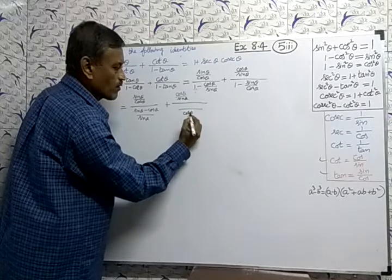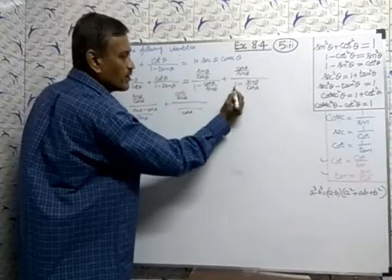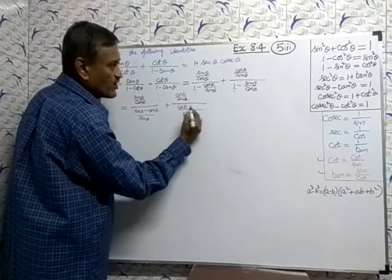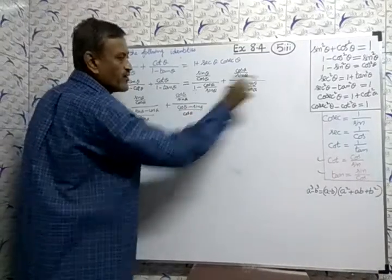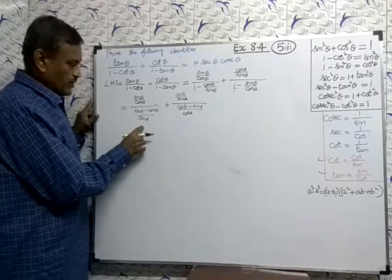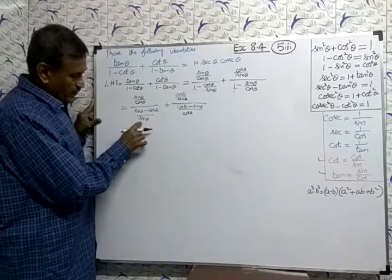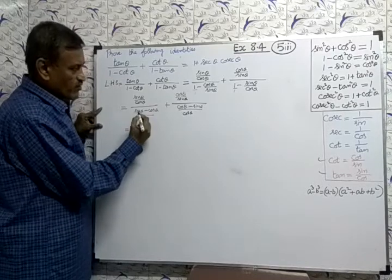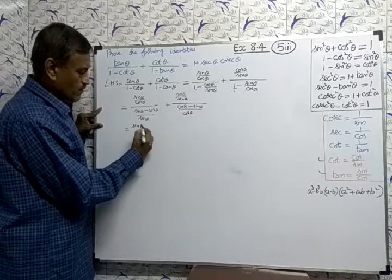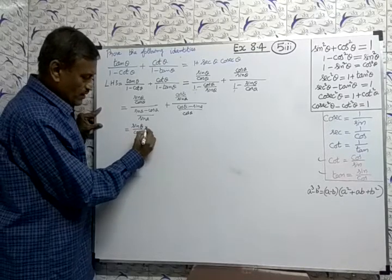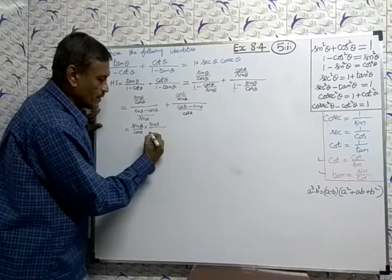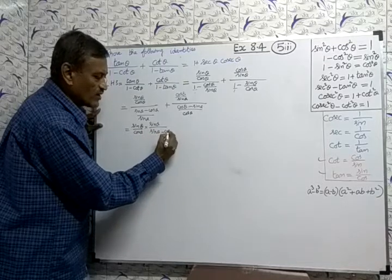After simplifying the denominators, flipping the complex fractions: sine theta by cos theta, multiplied by (going upside down) sine theta divided by (sine theta minus cos theta).